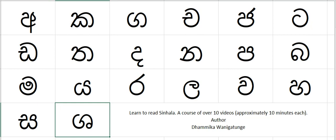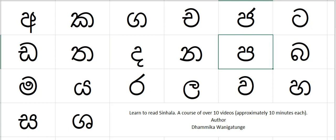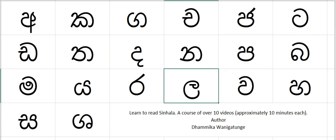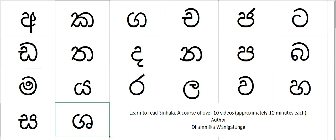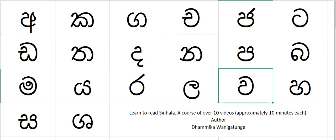Now let's do random letters — that means we're not following them in order. Let's start with this letter. How do we sound this one out? Ta, ga, pa, la, ma, a, sha, da, cha, wa, ga.